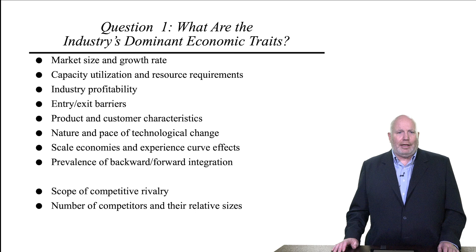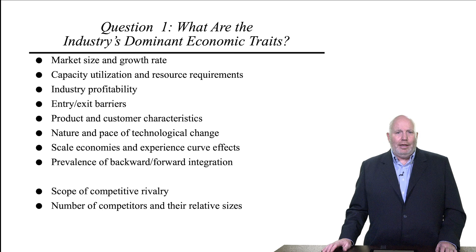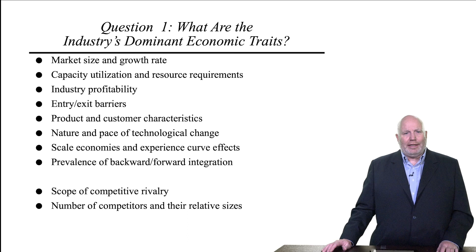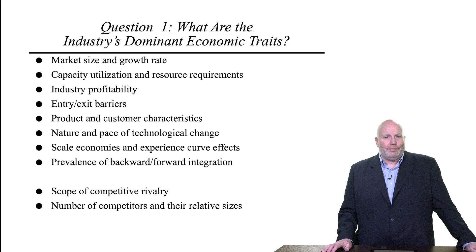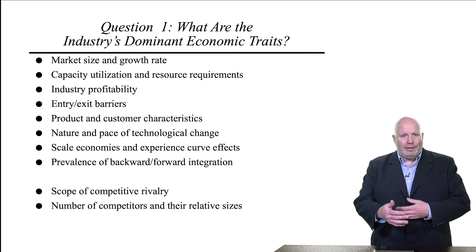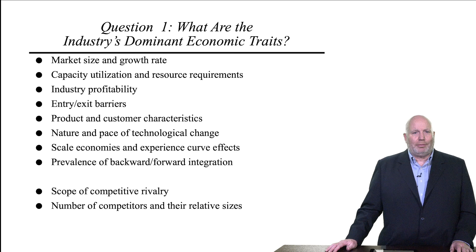We have to think about scale economies and experience curve effects — things like what does the cost curve look like? Is it a very sharp long-run average cost curve as you see in microeconomics, or is it relatively flat? We also want to think about the prevalence of backwards or forward integration: are firms using contracts, or are they actually integrating forwards and backwards? We'll look at some case studies of this type of integration. We have to think about the scope of competitive rivalry — how do firms compete? Do they compete on price, or on product services? Much of the food industry is what we call monopolistic competition, meaning firms do a lot of marketing to make their products look different through advertising and product innovation, but they're still buying from the same farmers and selling to the same consumers — just trying to differentiate their products.